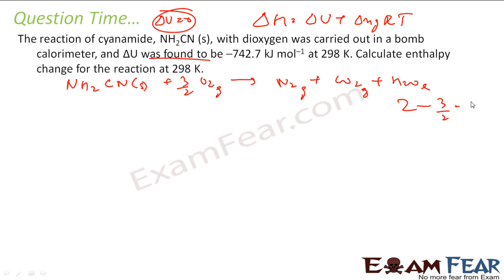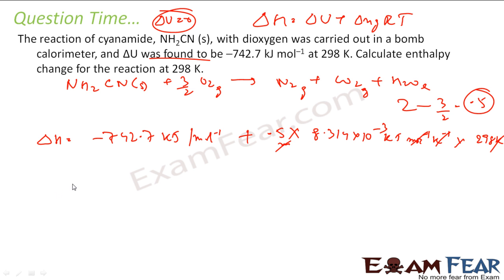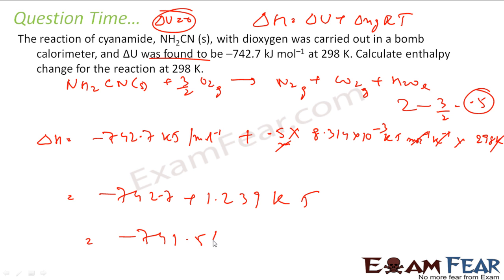The gaseous products give 2 moles of gas; gaseous reactants are 3/2. So delta n(gas) = 2 − 3/2 = 0.5. Therefore delta H = −742.7 kJ/mol + (0.5 × 8.314 × 10⁻³ kJ/mol·K × 298 K) = −742.7 + 1.239 = −741.5 kJ/mol.